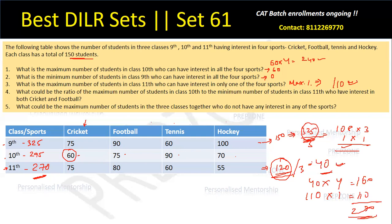Question 4: What could be the ratio of the maximum number of students in class 10 to the minimum number of students in class 11, who have interest in both cricket and football? For class 10, there are 60 students interested in cricket and 70 in football. If all 60 cricket students are also interested in football, the maximum number of students interested in both cricket and football is 60. The remaining football students can distribute within tennis and hockey to fulfill other conditions.